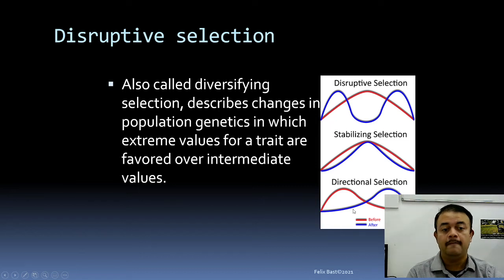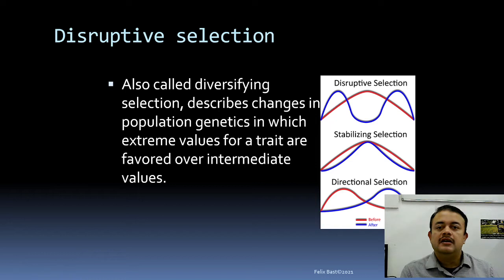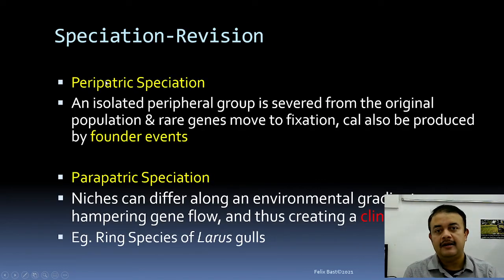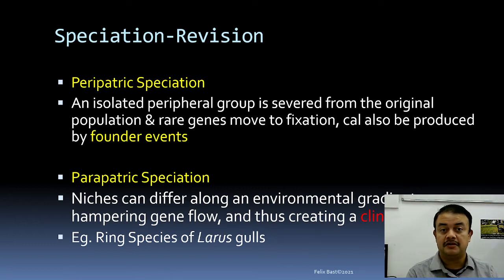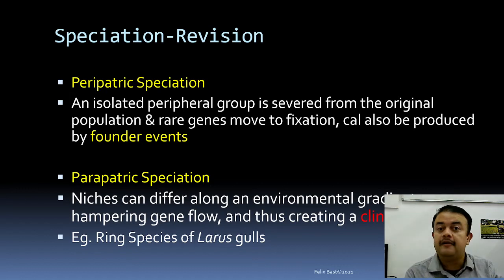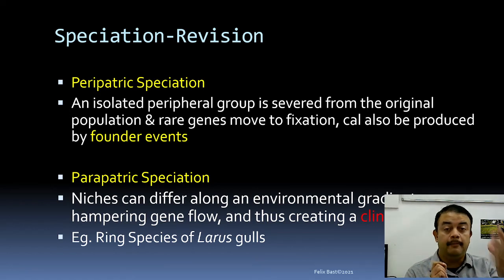Other types of selection include stabilizing selection and directional selection — for example, the increasing neck length in giraffes. Disruptive selection is one mechanism through which sympatric speciation can happen. Peripatric speciation occurs when a peripheral group gets severed from the original population and rare genes move to fixation — for example, the polar bear versus the brown bear. It can also arise from founder events, where even a single pregnant individual is introduced to a new area, such as an island, establishing a new population.